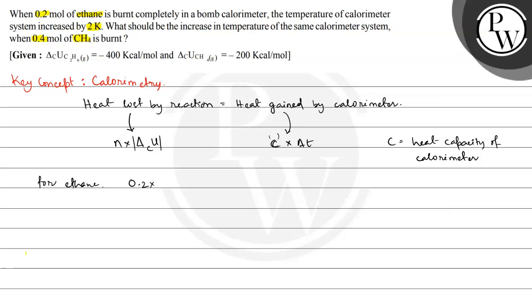...the heat of combustion of ethane is minus 400. But here we will use the mod, so 400 is equal to heat gained by calorimeter, that is C multiplied by delta T. So 2 Kelvin is increasing, so this is 2 Kelvin.